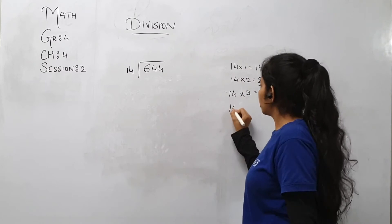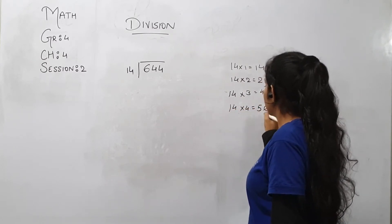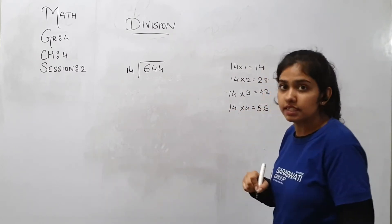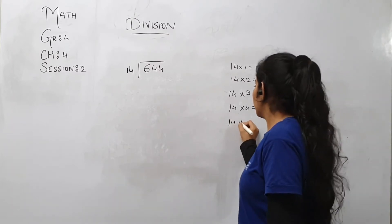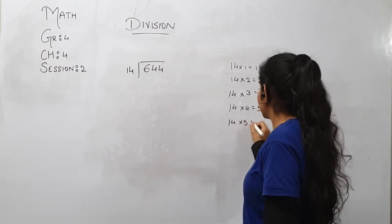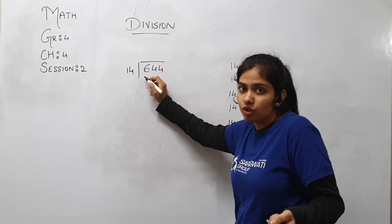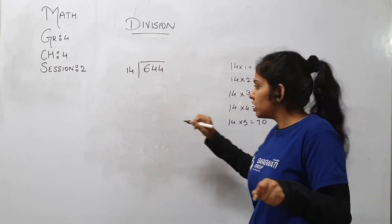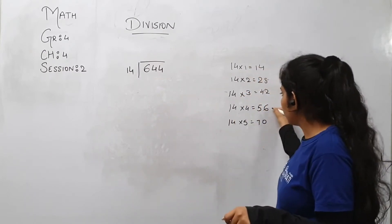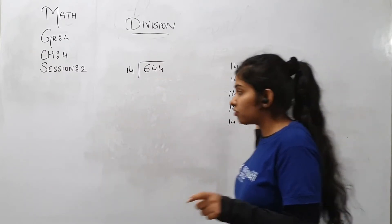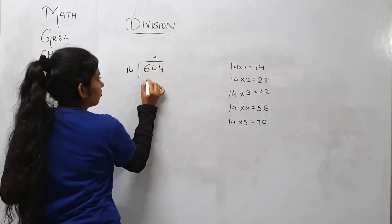40 fours are 56, 40 fives are 70. So 70 is greater than 64, so we will not take 40 fives. 40 fours are 56.